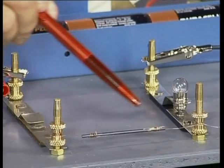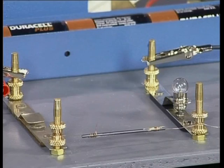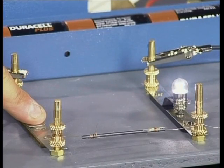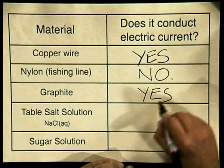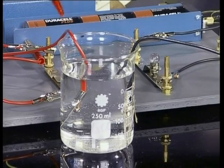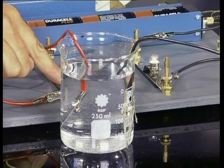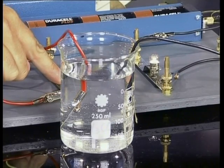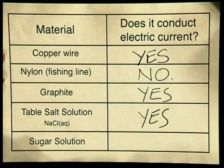Here is our third material, which is a piece of graphite, commonly known as pencil lead. I will now close the switch. Notice that the bulb is glowing brightly. The answer here is yes, the graphite will conduct electric current. I have now placed two conducting leads into my solution of table salt. I will now close the switch and notice that the bulb is glowing. Yes, table salt is a conductor of electricity.